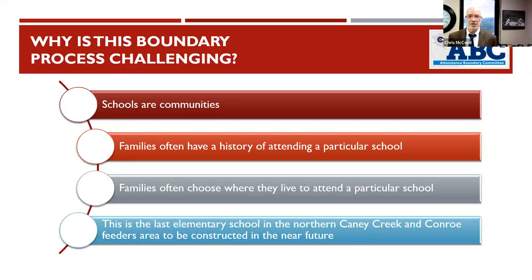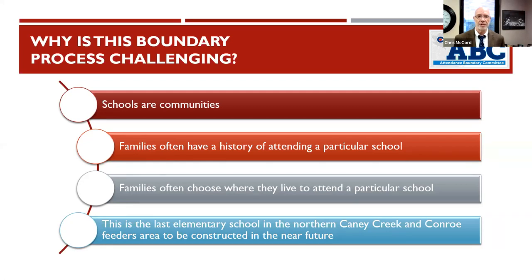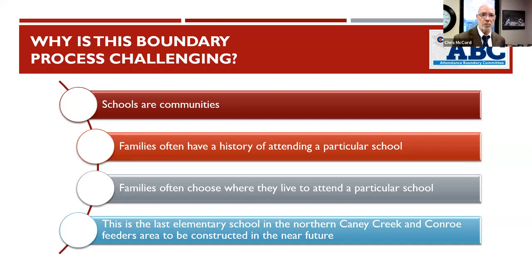So this particular process — why is it challenging? We have a lot of schools with capacity issues in both the Caney Creek and Conroe zones. We're efforting to solve a lot of problems, and we're not going to be able to solve all the issues. We have 950 seats — it's going to be a gorgeous new school, and we're excited about it for the kids and the staff — but it's just one school. It's the last elementary school that's going to be developed in the northern Caney Creek and Conroe feeders in the near future.